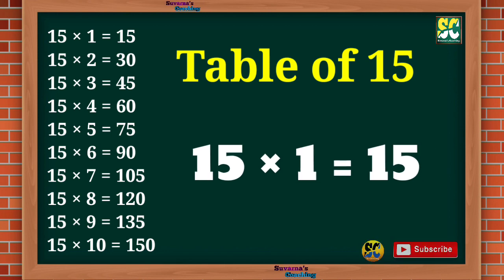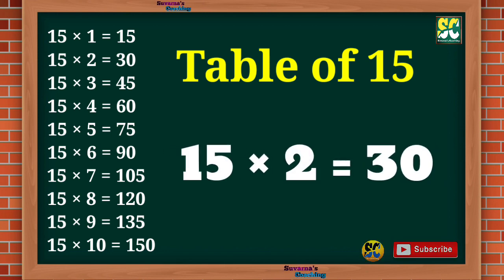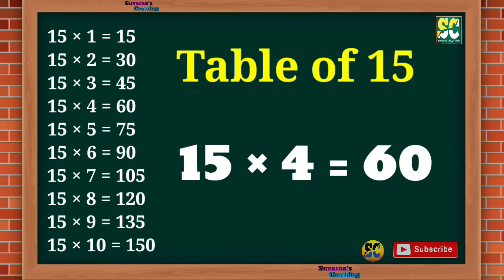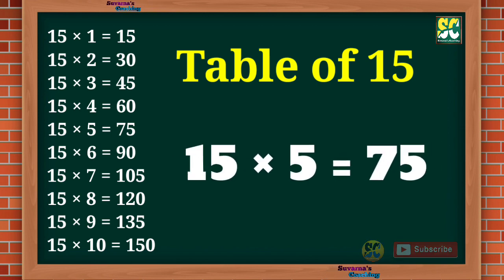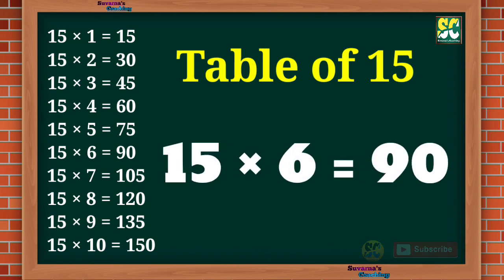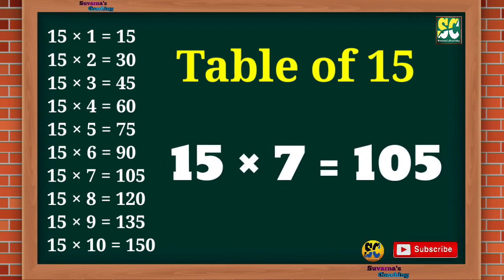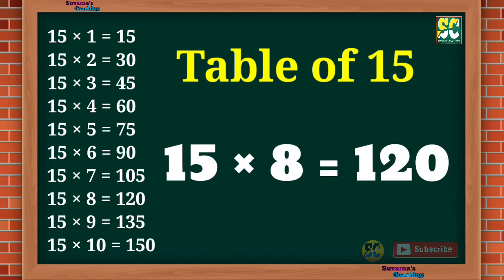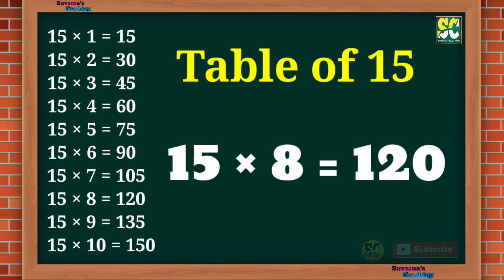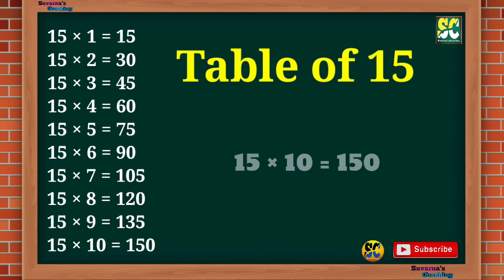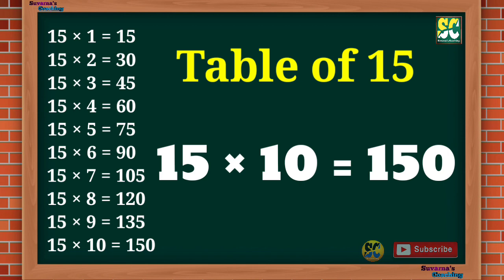Table of 15. 15 1s are 15, 15 2s are 30, 15 3s are 45, 15 4s are 60, 15 5s are 75, 15 6s are 90, 15 7s are 105, 15 8s are 120, 15 9s are 135, 15 10s are 150.